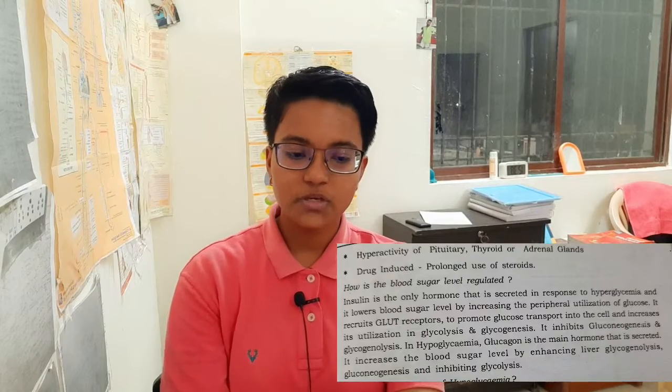Thus, the concentration of insulin in blood parallels that of blood glucose. Name other substances which cause release of insulin from pancreas apart from glucose. These include amino acids, free fatty acids, ketone bodies, glucagon, secretin, and sulfonylurea drugs such as tolbutamide and glyburide.